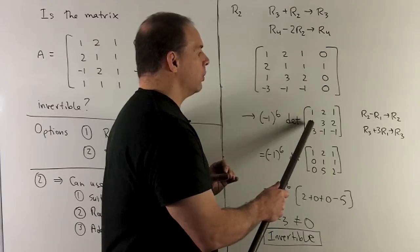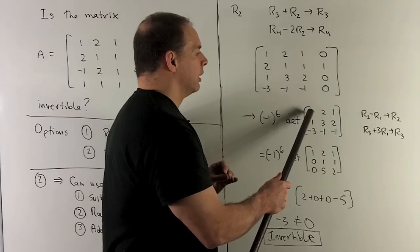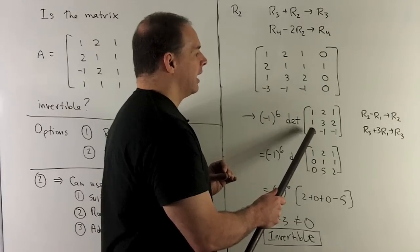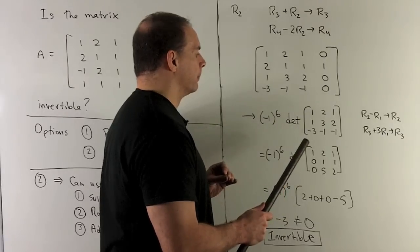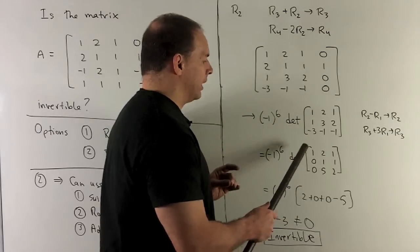The idea is going to be we take row 2, subtract off row 1, and I take row 3, add 3 row 1. When we do that, we get this matrix here.